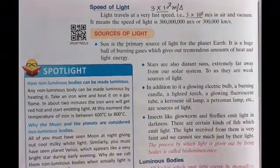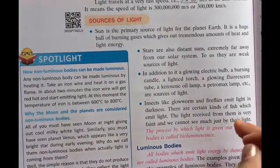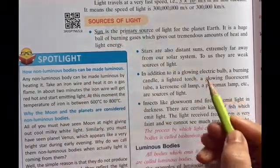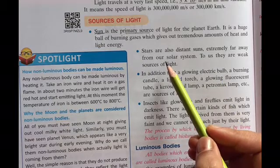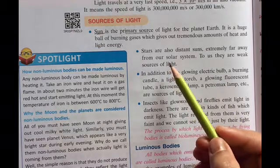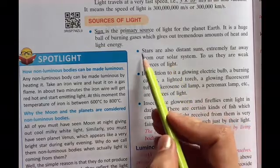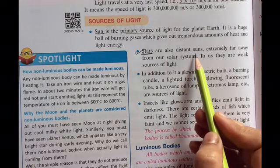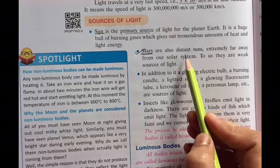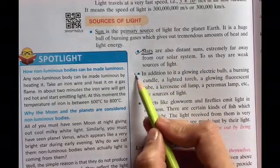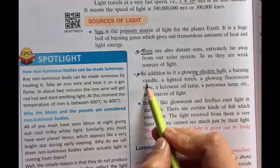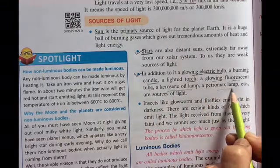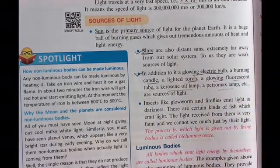Then next question that comes to our mind is sources of light. What are the different sources of light? As we know, sun is the primary source of light on the planet Earth. Even the stars, they are very far away from us. That's why we can see them as very small, and small energy comes to Earth from stars. In addition to that, we have electric bulb, candles, torch, glowing fluorescent tubes, kerosene lamp, petronex. These are all our sources of light.